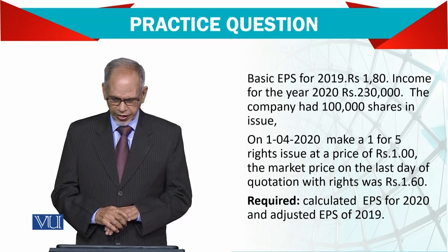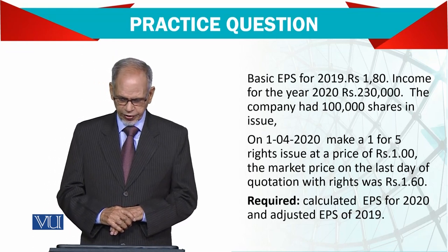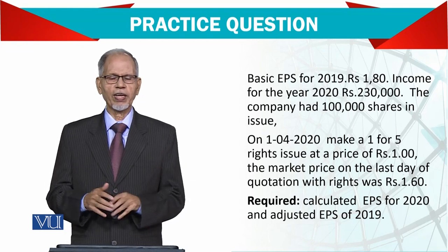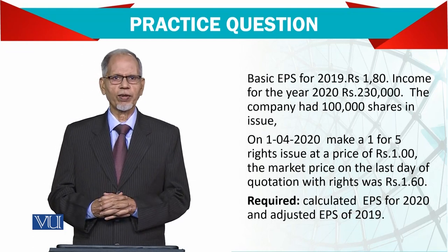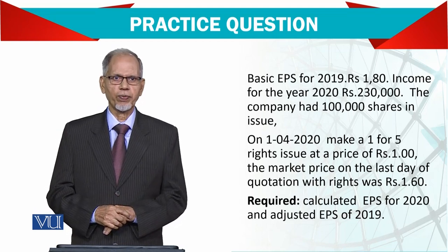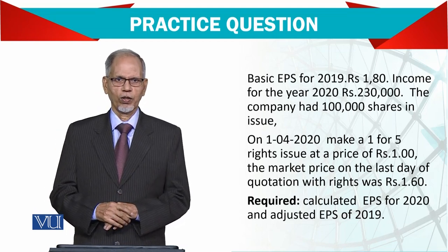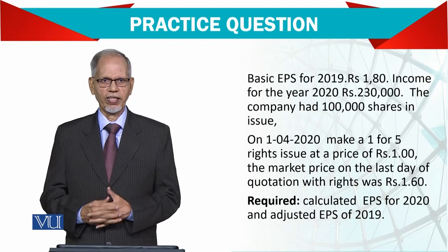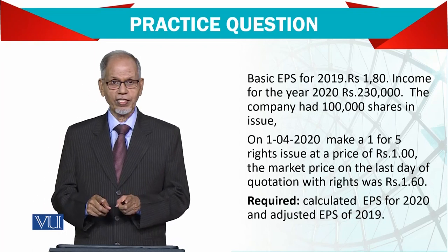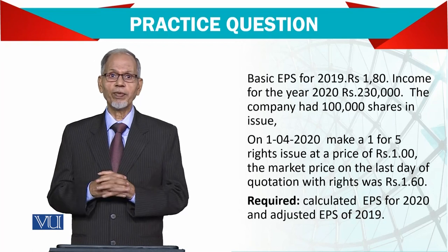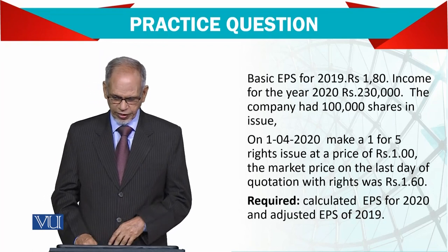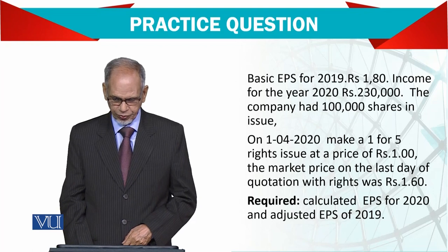The market price on the last day of the rights quotation was 1.6. Shareholders will prefer to buy the share at the discounted rights price. The right share can only be issued to the existing shareholders, not to outsiders. The requirement is to calculate the earnings per share.